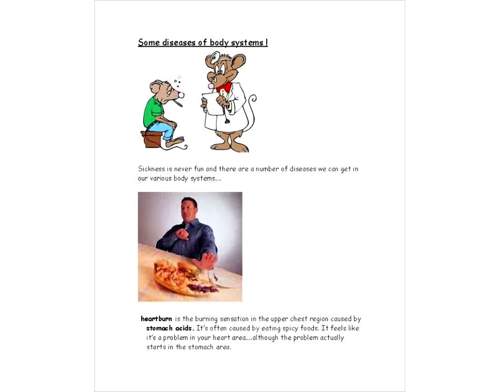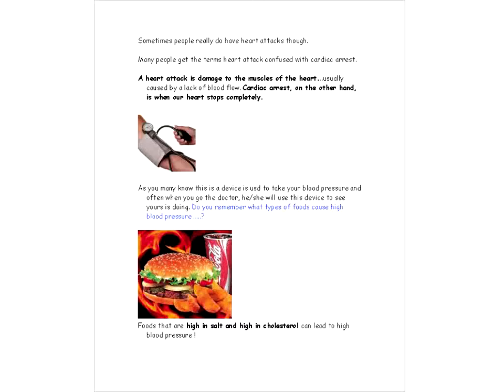Okay, let's look at some different diseases of the various body systems that we looked at. This little guy seems not too well. So, of course, sickness is never fun and there are a number of different diseases we can get in various body systems. Now, one thing you might have gotten once before is heartburn, which is a burning sensation in the upper chest region caused by stomach acid. It's often caused by eating spicy foods and it feels like it's a problem in your heart area. Although the problem actually starts in the stomach area. And myself, one time I ended up going to the doctor, or going to the emergency, because I felt like I had a pain in my chest, but it just turned out that it was stomach acid. But again, it feels kind of like it's a heart problem.